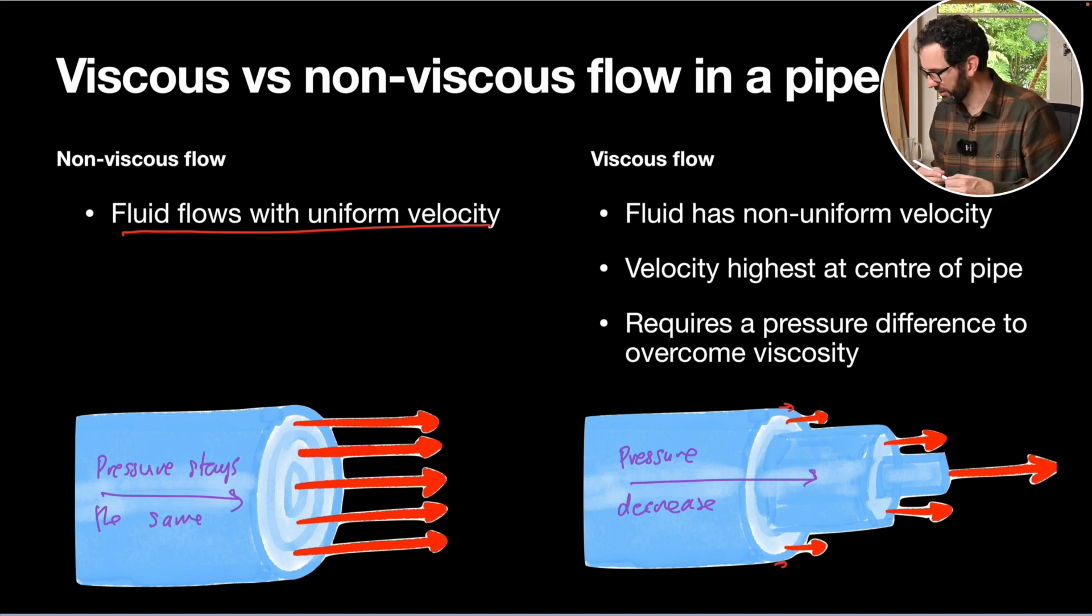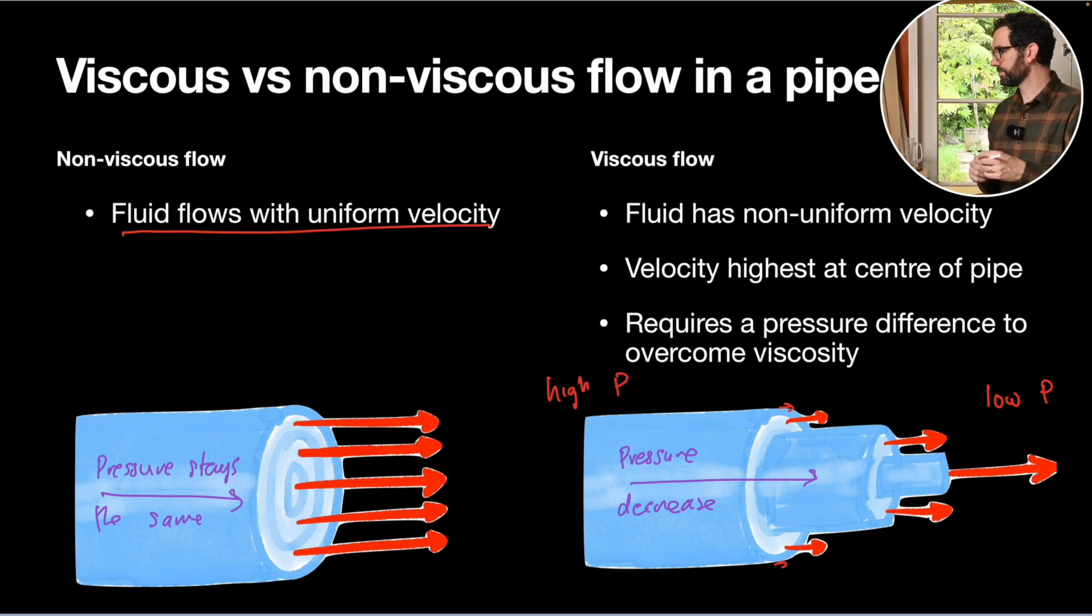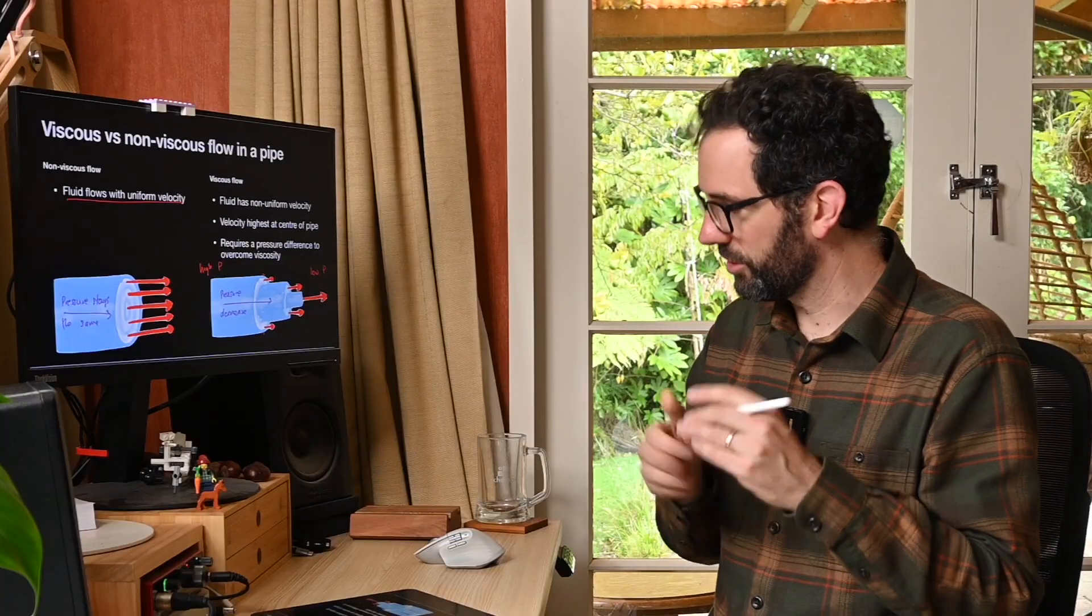Another way of interpreting that is to make fluid flow where there's viscosity, you have to apply a higher pressure at one end, and there'll be a lower pressure at the other end. And that will be the driving force that pumps your liquid down the pipe.